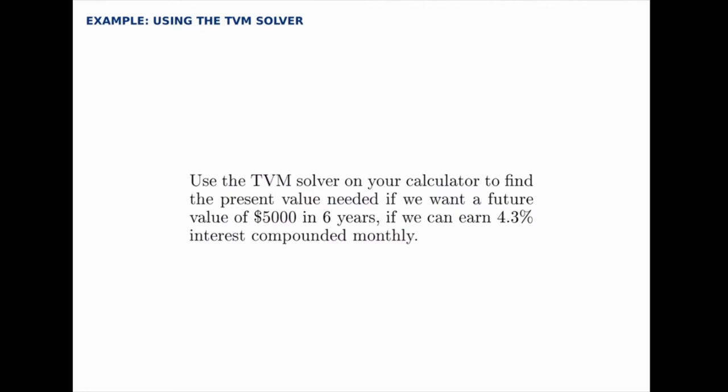The question reads: use the TVM solver on your calculator to find the present value needed if we want a future value of $5,000 in six years if we can earn 4.3% interest compounded monthly. So this is a compound interest problem where we know the future value, we know the amount of time, the interest rate, and the compounding period, and we're looking to solve for the present value.